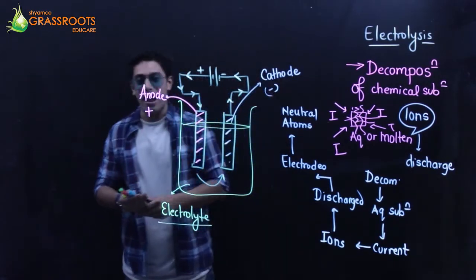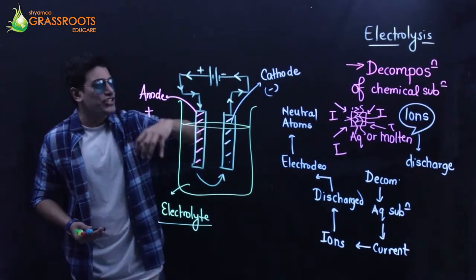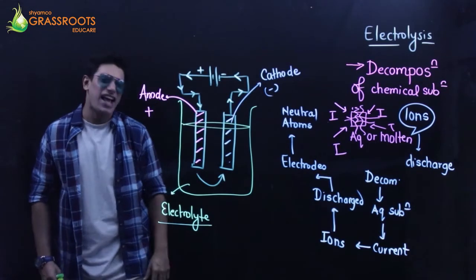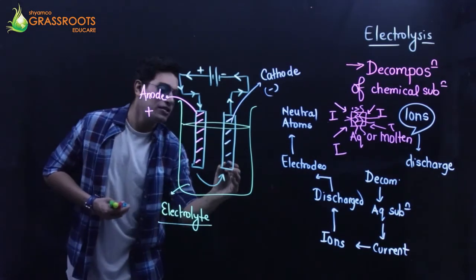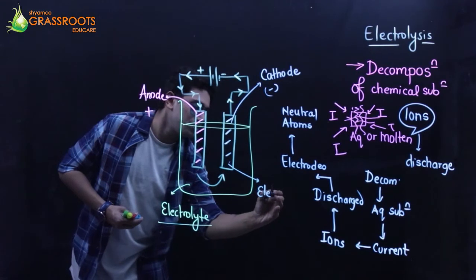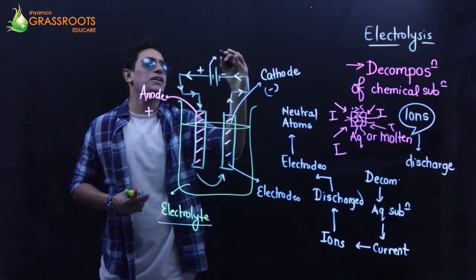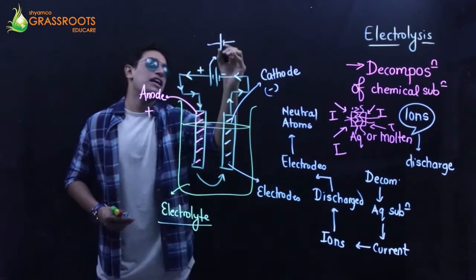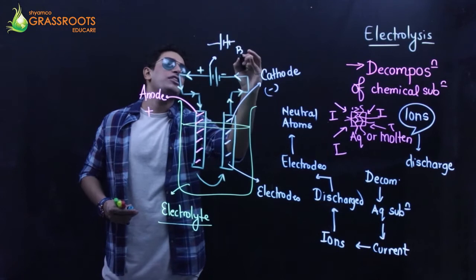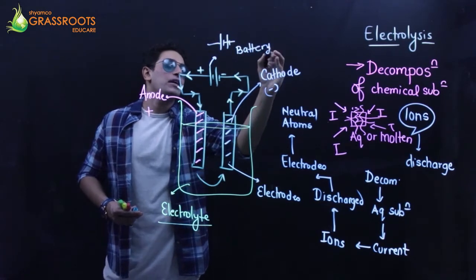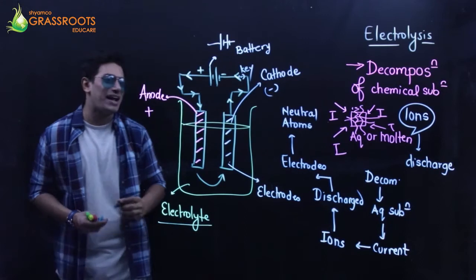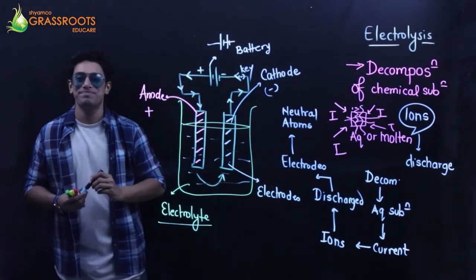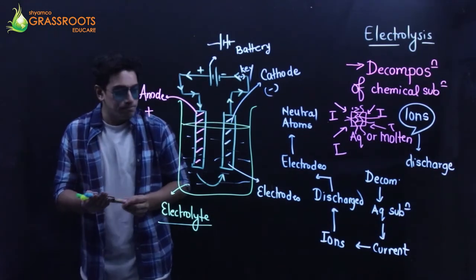This setup is called an electrolytic cell. These are called electrodes. This is simply a battery or a cell - if there is a single one we call it a cell, if there are multiples we call it a battery. There has to be a key to switch on. This is an electrolytic solution.